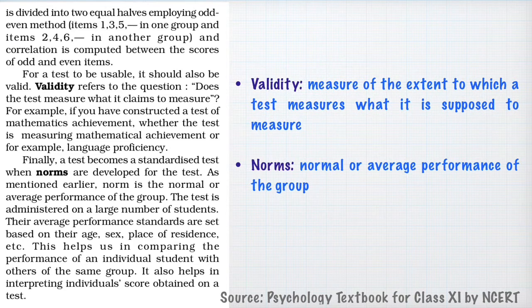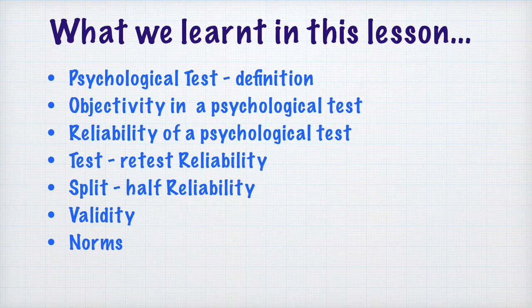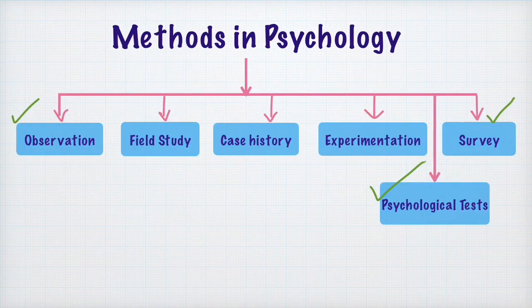These are the important characteristics of a psychological test. To summarize, we have understood the meaning and definition of psychological test, objectivity, reliability, test-retest reliability, split-half reliability, validity, and norms. These terms may be asked as one-mark questions in your board examination. Today we covered psychological tests as the third method of research in psychology; in our next lecture we will take up another method.